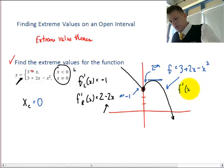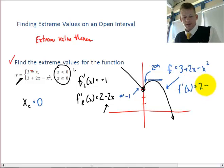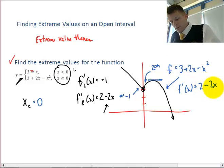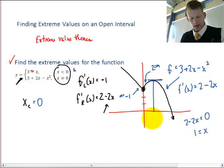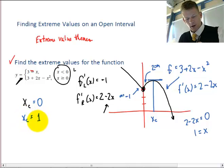So remember, this function is 3 plus 2x minus x squared, so what I'm going to do is I'm going to take that derivative, which will be 2 minus 2x, I just did this, I should have just used what I had over there, I'm going to set it to 0, and when I solve, I'm going to get x equals 1. So that's telling me that my other critical point to check is 1.